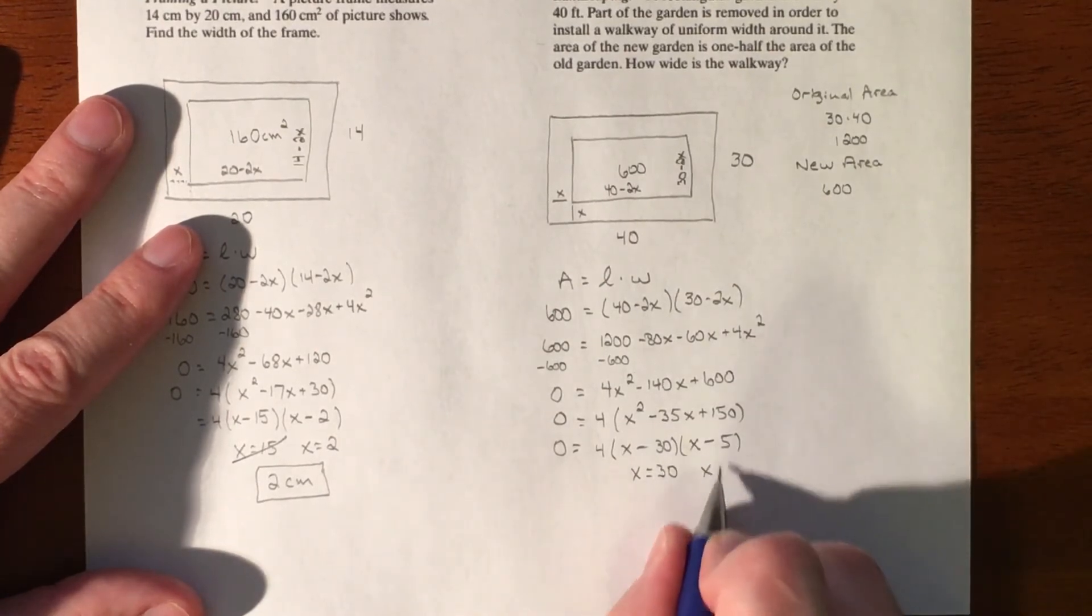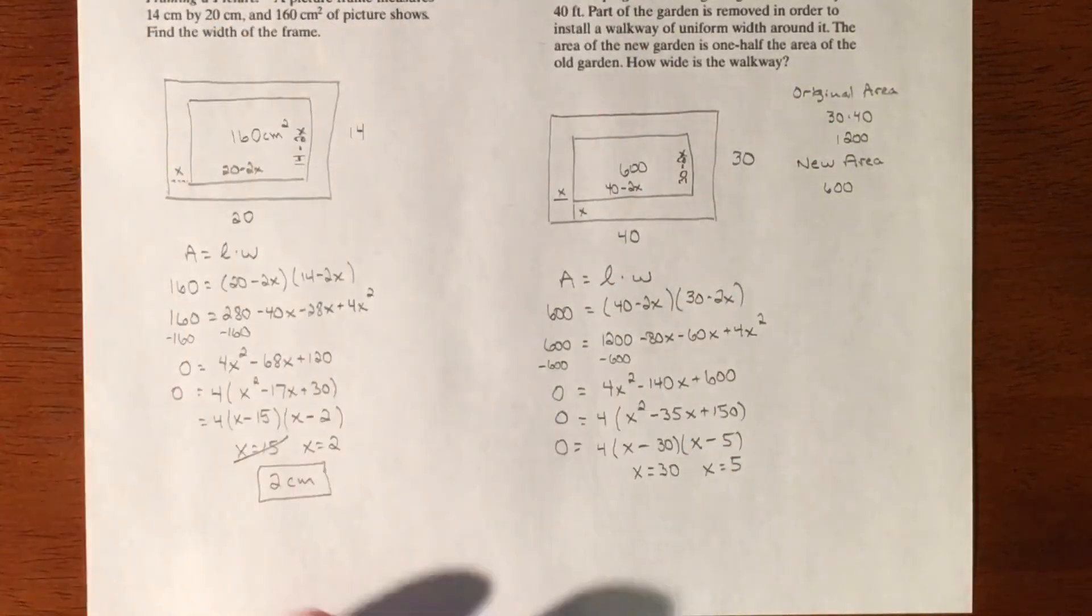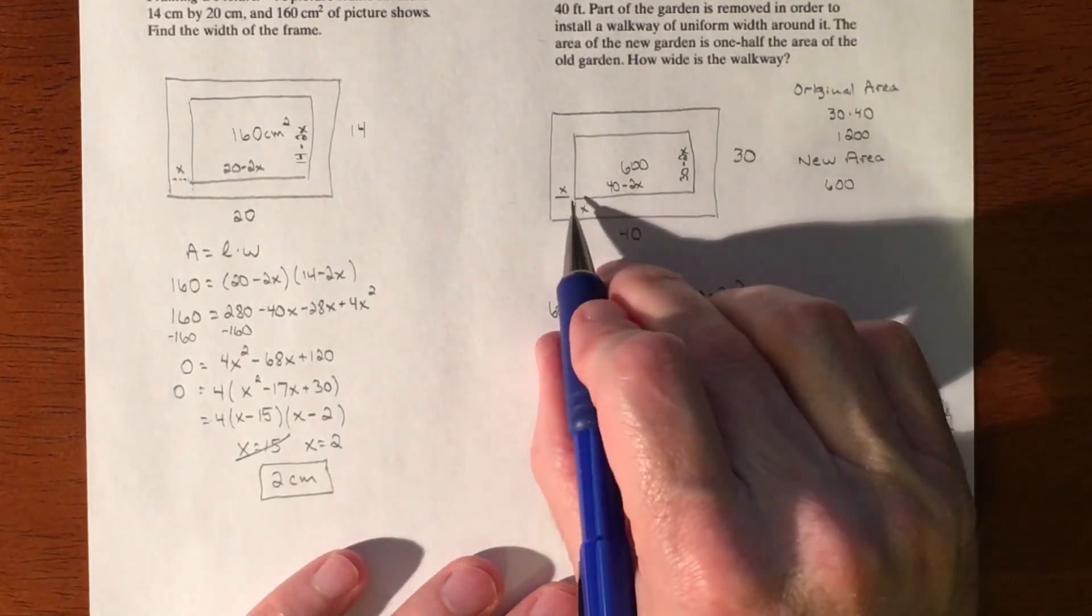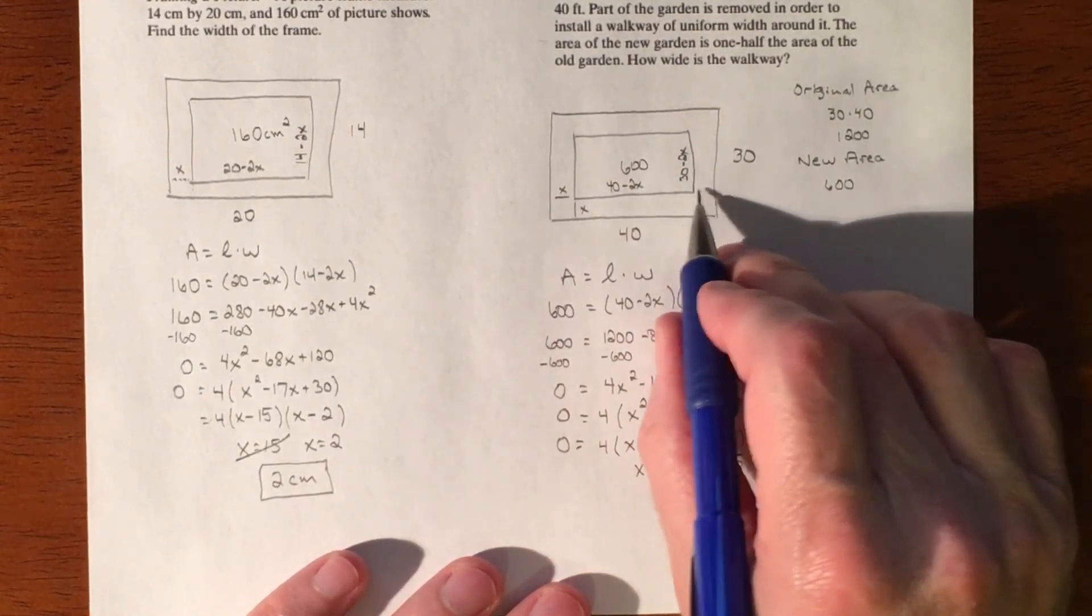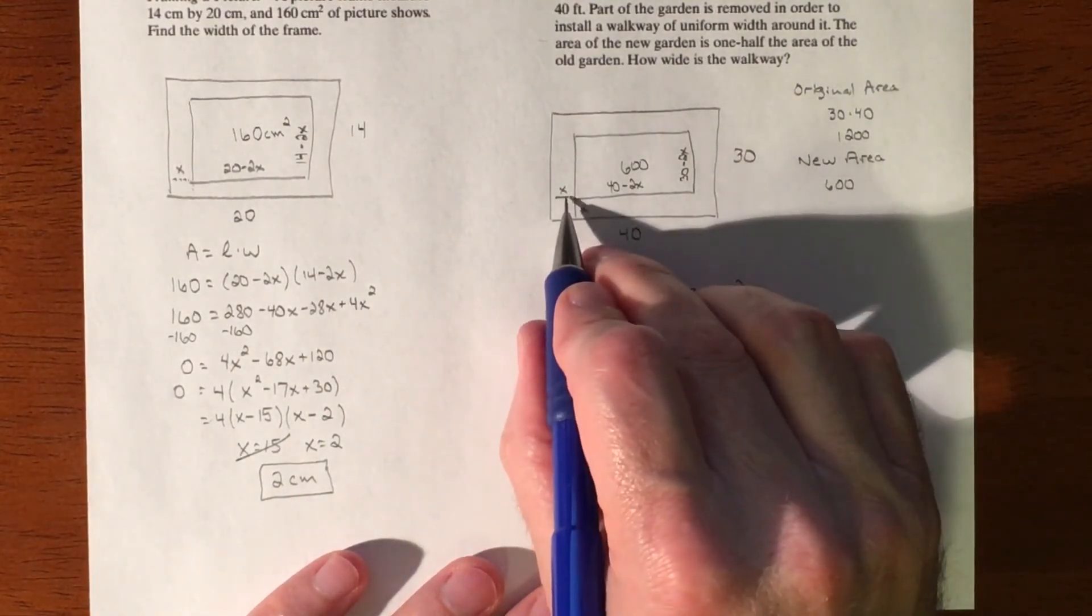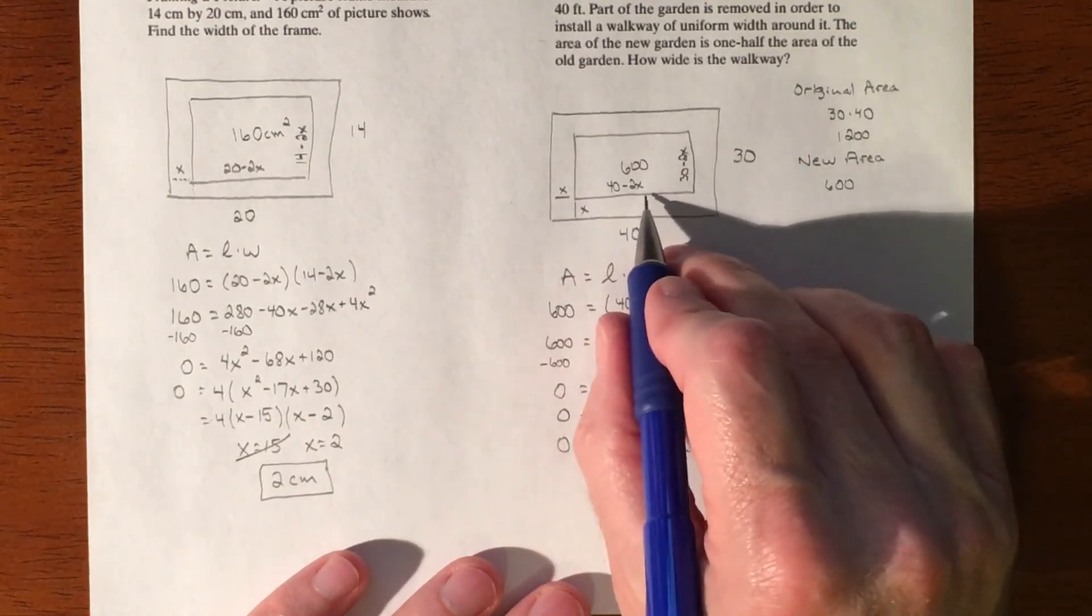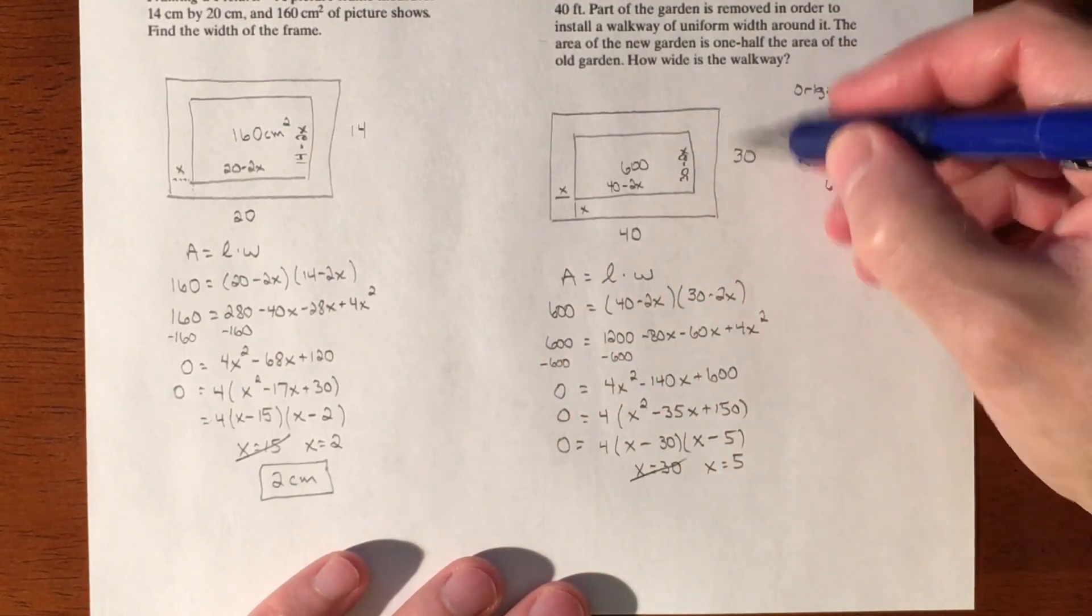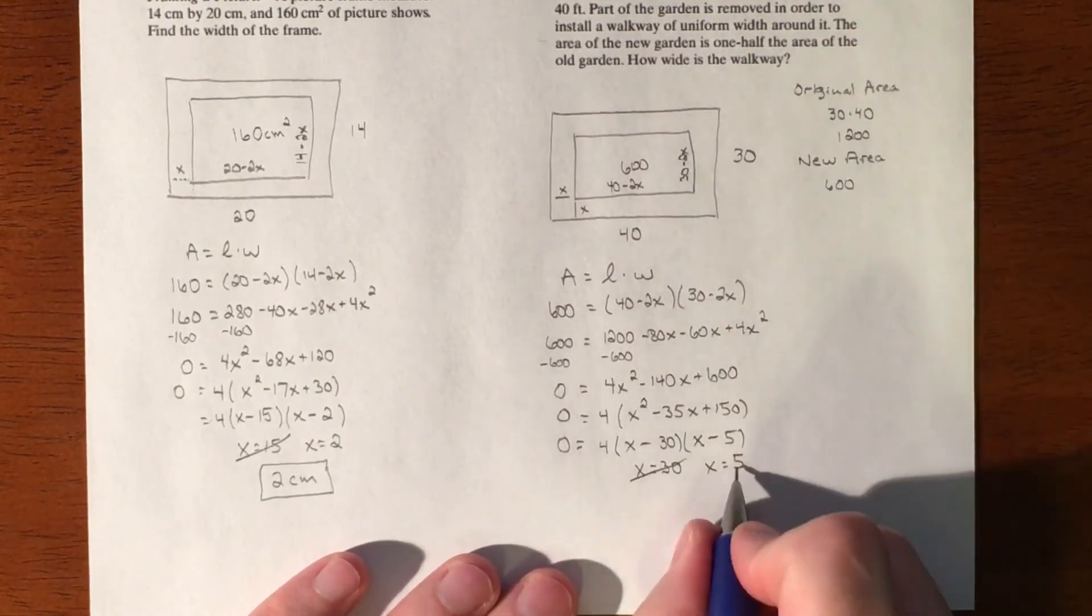setting this equal to zero and solving it, we get 30. Setting this equal to zero and solving it, we get 5. So it seems like we get two different answers. However, one does not make sense because if you take 30, 30 is what we're cutting off of each side. Well, you only have 40, so if you cut 30 off here and 30 off here, you don't have a length anymore. So 30 is too much, but 5 could work. So if you cut 5 off of here and cut 5 off of here, you'd be cutting 10, so that would make this dimension 30. And then if you cut 5 and 5 off of the 30, that's going to leave you with a 20, and 20 by 30 would be 600.